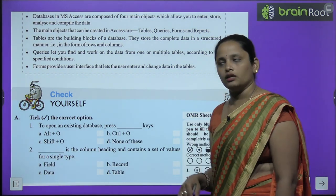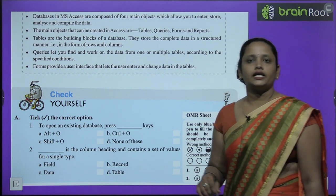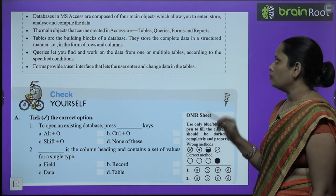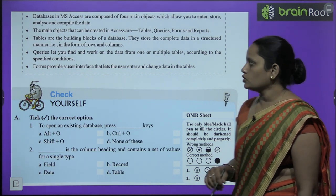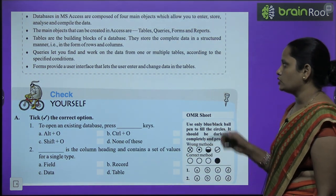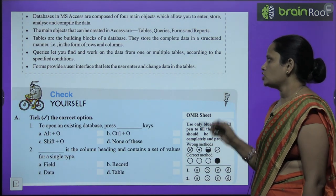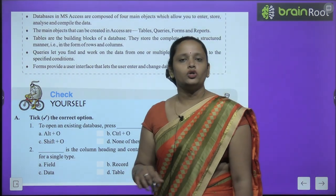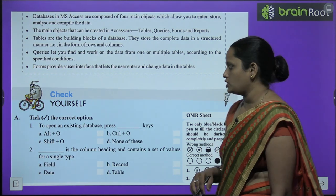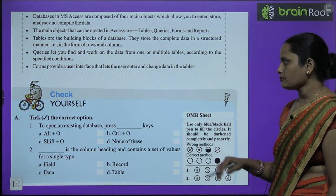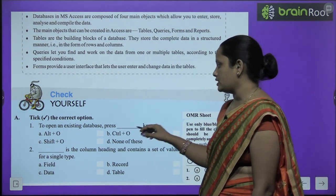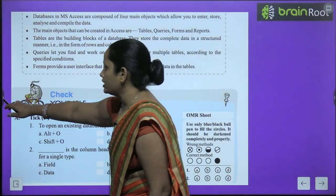Database in MS Access is composed of four main objects which allow you to enter, store, analyze, and compile data. The main objects that can be created in Access are: tables, queries, forms, and reports. Tables are the building blocks of the database — they store complete data in a structured manner in the form of rows and columns. Queries let you find and work on data from one or multiple tables according to specific conditions. Forms provide a user interface that lets the user enter and change data in the table.